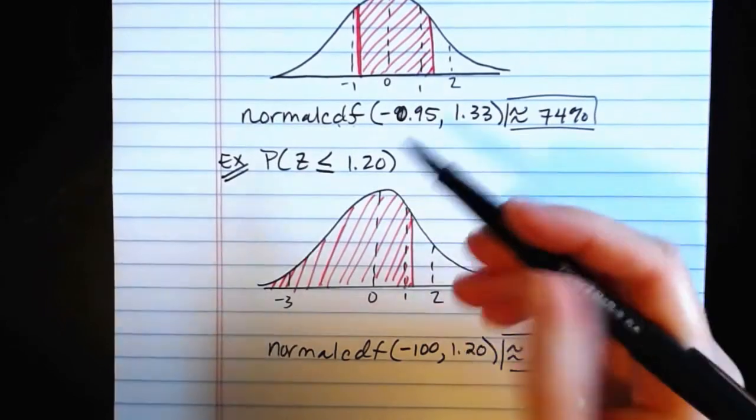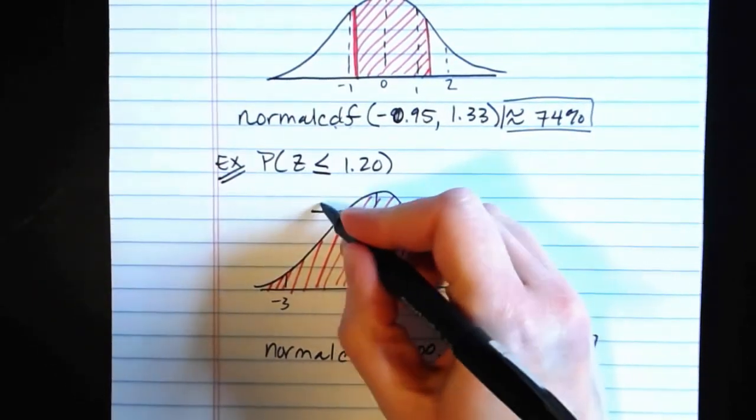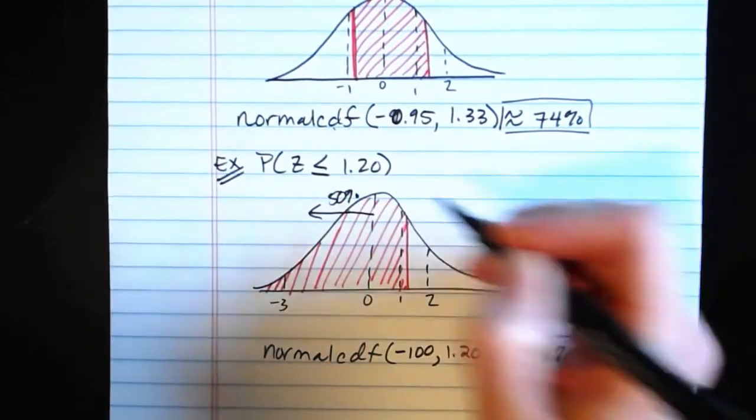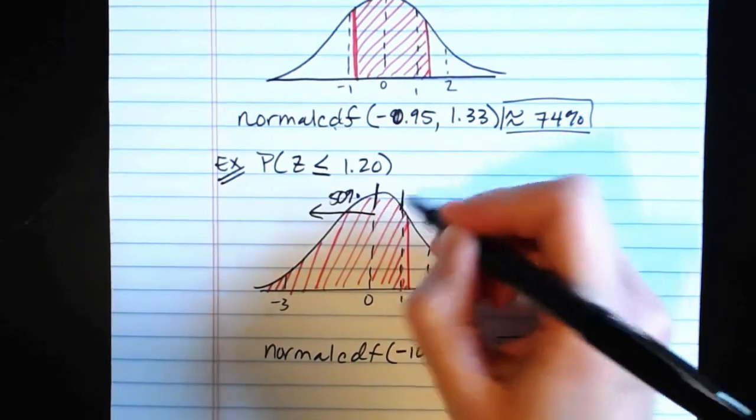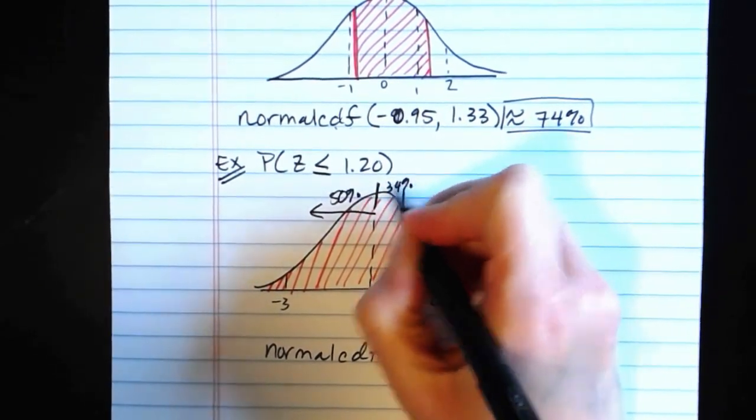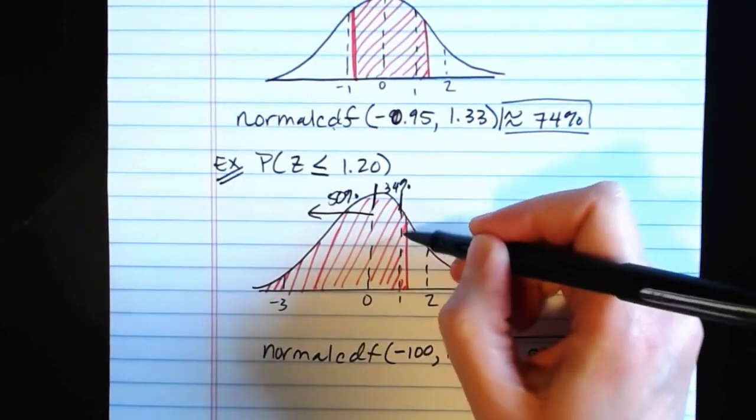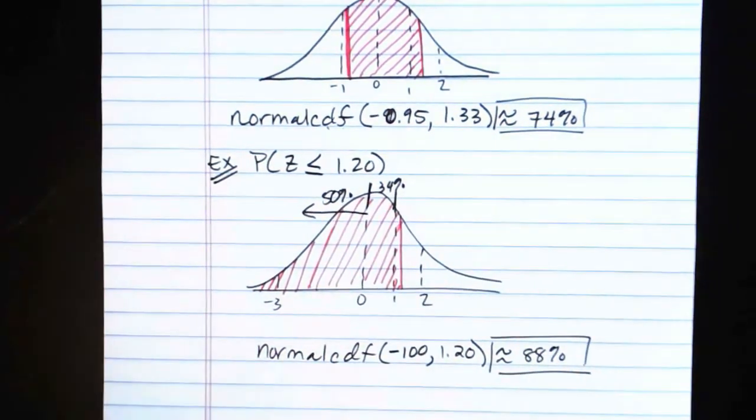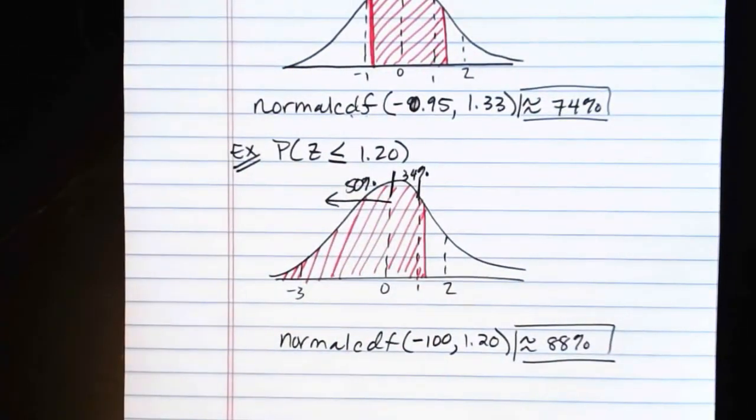Now, certainly, we could check this out. From the midpoint all the way to the left, that would be 50%. Between here and here, we know that's another 34%, so that would be 84%, and we've gone a little bit past that, and we can see we're coming in at 88%. So that seems perfectly reasonable.